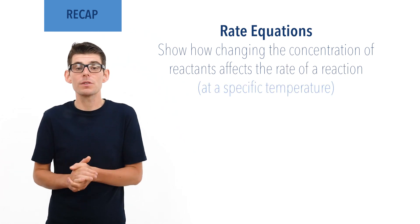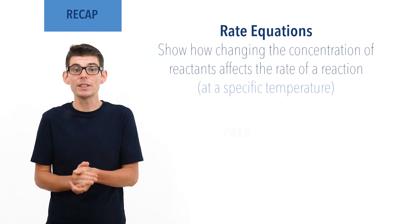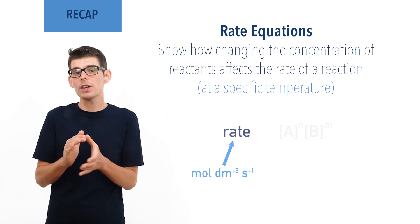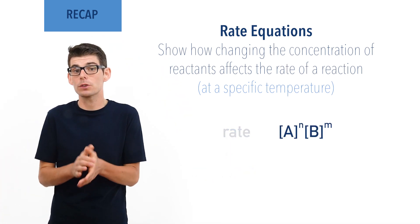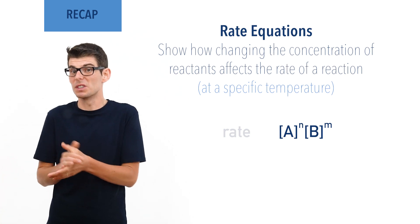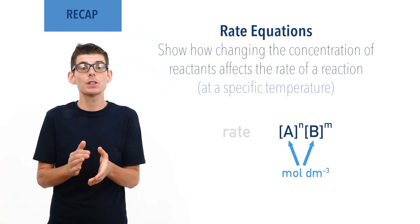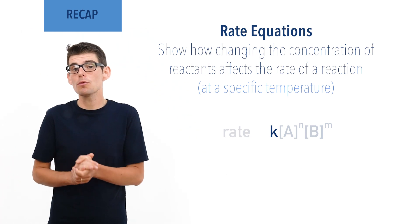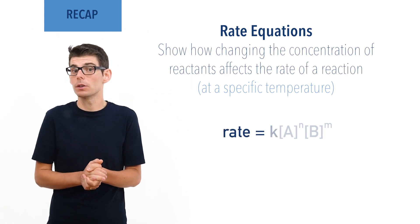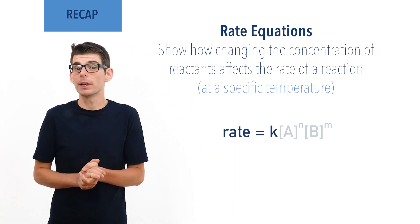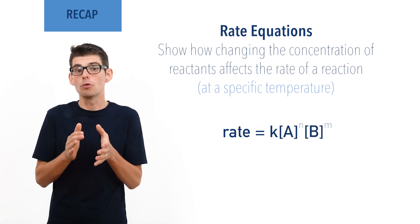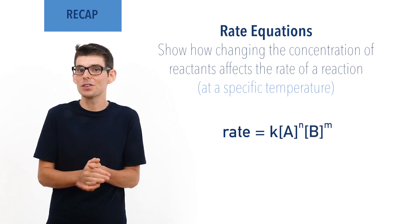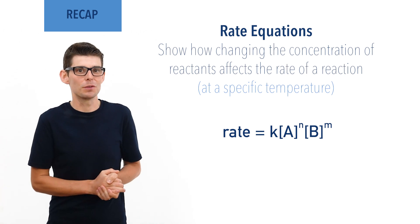Rate equations contain three parts: rate, with units of mole per decimetre cubed per second; concentrations of reactants raised to their orders, with units of mole per decimetre cubed; and a rate constant k. This gives a general arrangement of rate equals rate constant k multiplied by concentrations of the reactants raised to the power of the order of the reaction with respect to their concentration.